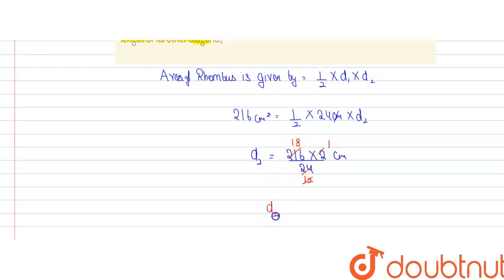So we get the value of d2 equals 18 centimeters, which is our answer. The length of the other diagonal is 18 centimeters.